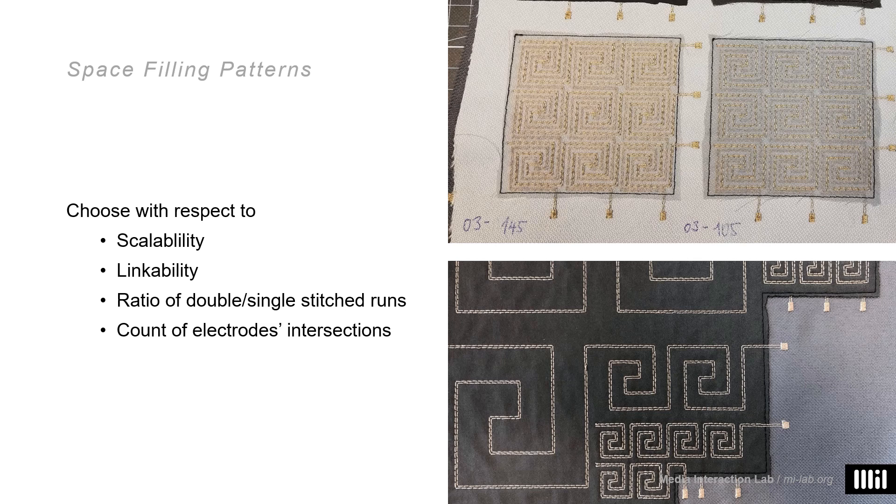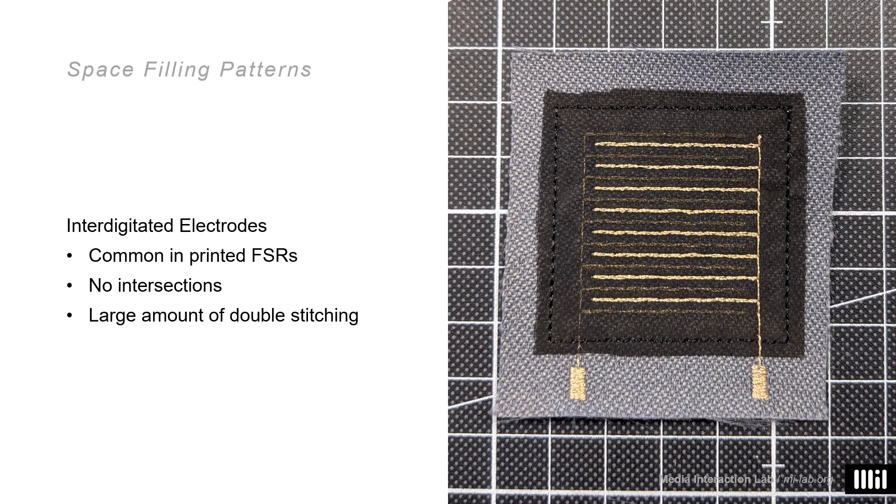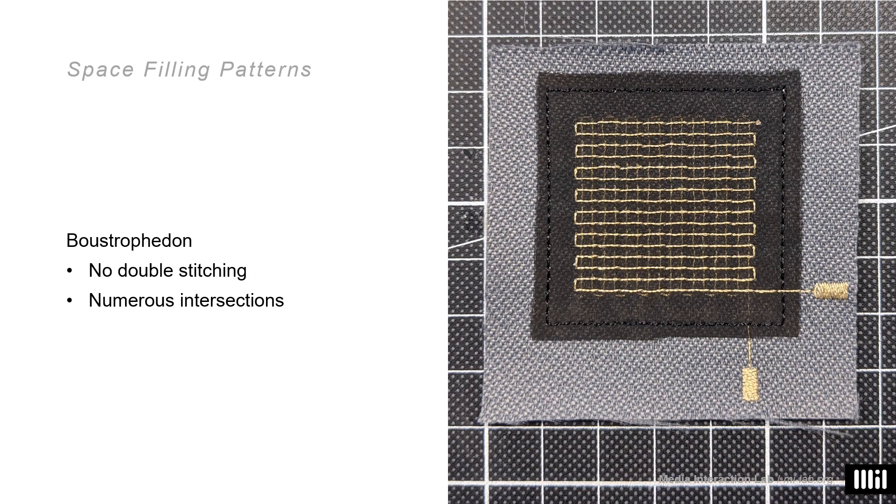Let's see the actual space-filling patterns that we compared. We chose them along several properties such as intersection count and ratio of double with single stitches. First is the interdigitated electrode layout, or IDE for short, which is probably the most common for printed FSRs. It has no intersections but lots of double stitches along the forks here. Second is the boustrophedon, quite the opposite, with lots of intersections but no double stitches whatsoever.